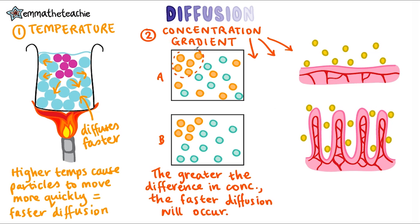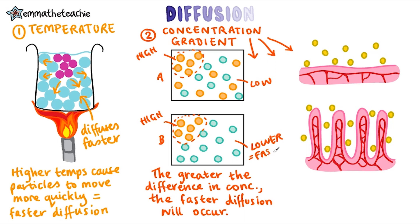We can see in both boxes that the high concentration is in the top left corner, so we can label it as such. Then we compare the rest of the area of gases. In Box A there is a lower concentration than the top left corner, but in Box B it is even lower as there are no orange gas molecules. Therefore it's a steeper concentration gradient, so diffusion will be much faster in Box B. It will still happen in Box A, but the diffusion will be a lot slower.